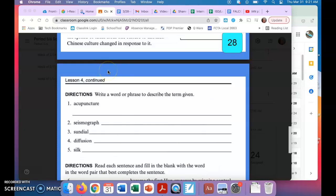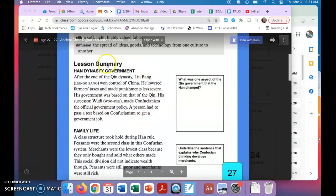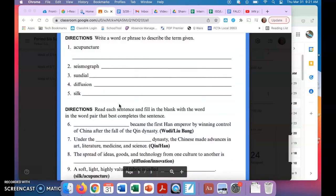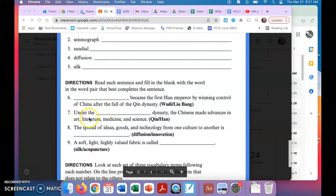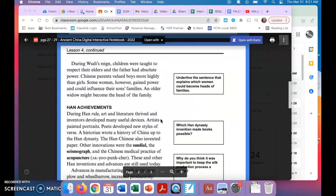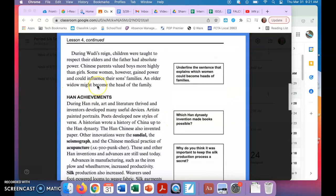Go back to your reading, which will be on the first page, this first paragraph, where you can find that answer. Number seven: under the blank dynasty, the Chinese made advances in art, literature, medicine, and science. Is that under the Chin dynasty or the Han dynasty? Again, you're going to go back to the second page and you're going to look at the achievements.